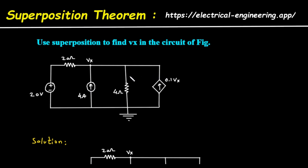Let's first examine the circuit diagram. On the far left, we have a 20 volt DC voltage source. This is connected in series with a 2 ohm resistor. The voltage at the node to the right of this resistor is labeled Vx.